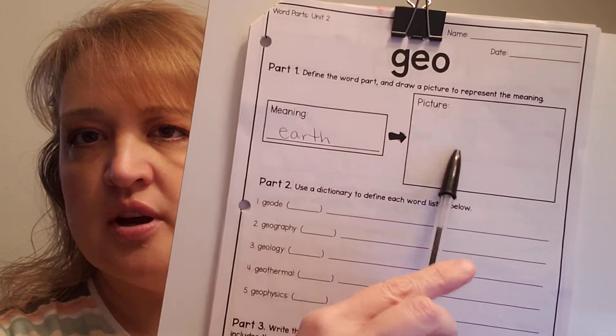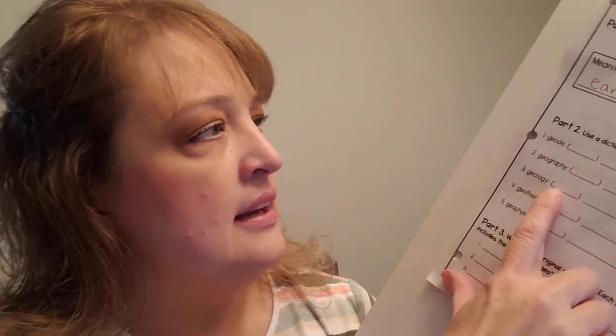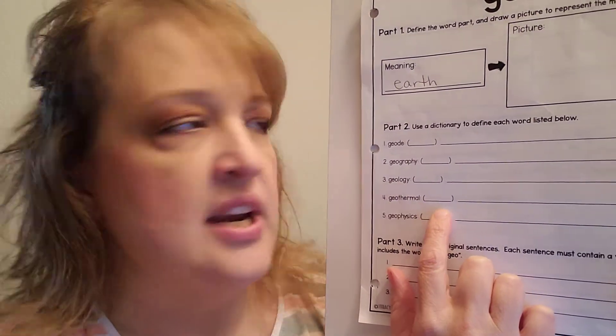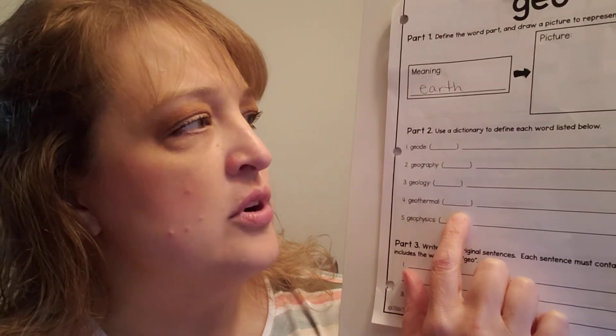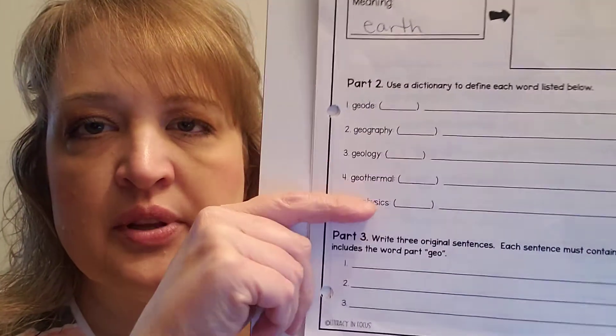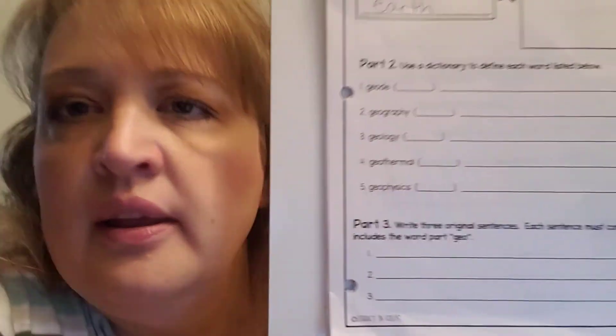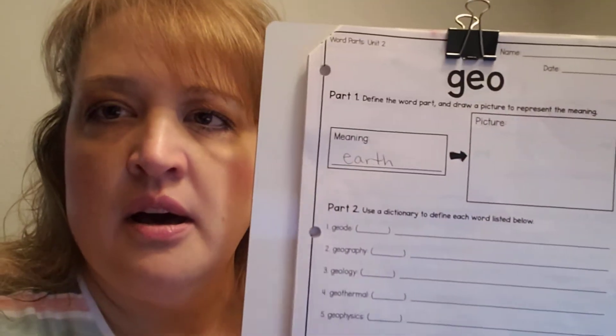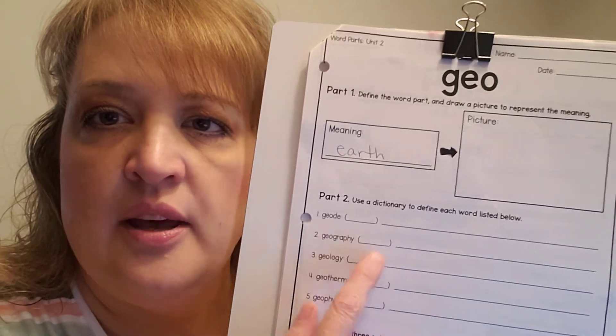So let's open up to geo. The meaning of geo is earth. I will let you take a minute to draw a picture there. In this section, it says to use a dictionary to define the words that are listed. What I need you to do is follow along with me. I'm going to pull it up on my computer as well, so open up a new tab and go to dictionary.com.